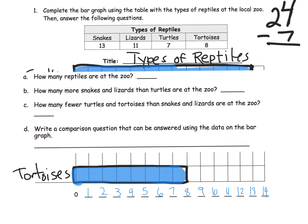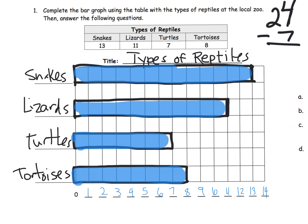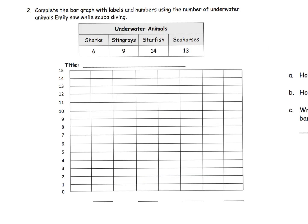The last question is how many fewer turtles and tortoises than snakes and lizards — another kind of comparison question. Parents and teachers, do you see all the vocabulary words that are essential for us to put on a word wall for our English language learners? And then the last one is to allow your students the opportunity to write their own questions, and students can make those as complicated or as easy as they want.